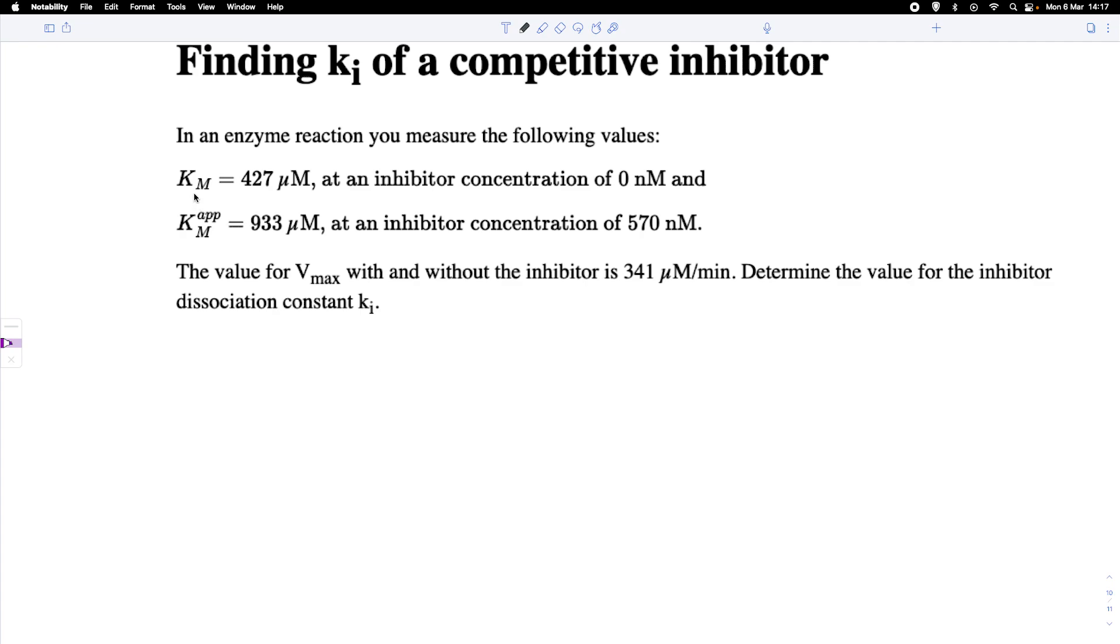So we measure a Km of 427 micromolar when we don't have an inhibitor present, and we measure an apparent Km, and this up indicates here that we have an inhibitor present. We find a Km up of 933 micromolar when we have an inhibitor concentration of 570 nanomolar.